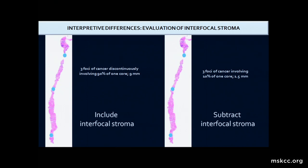Probably more concerning for your daily practice is this interpretive difference of how interfocal stroma is included or not included. If you go to Johns Hopkins, Dr. Epstein will tell you that the image on the left is three foci of cancer discontinuously involving 90% of one core and nine millimeters of cancer, because he includes the interfocal stroma. Another pathologist will tell you these are the same three foci of cancer involving 10% and 1.5 millimeters. In a situation where you're making decisions about management and specifically active surveillance based on percent core involvement or millimeters, this can have a major impact which is so far unquantitated.